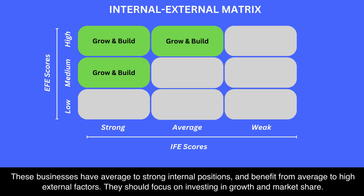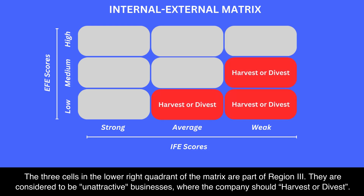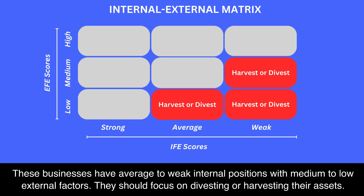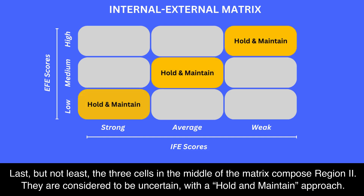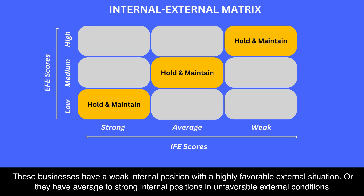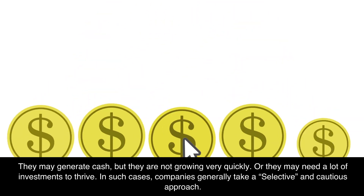They should focus on investing in growth and market share. The three cells in the lower right quadrant of the matrix are part of region three. They are considered to be unattractive businesses where the company should harvest or divest. These businesses have average to weak internal positions with medium to low external factors; they should focus on divesting or harvesting their assets. The three cells in the middle of the matrix compose region two. They are considered to be uncertain, with a hold and maintain approach. These businesses have a weak internal position with a highly favorable external situation, or they have average to strong internal positions and unfavorable external conditions. They may generate cash but are not growing very quickly.